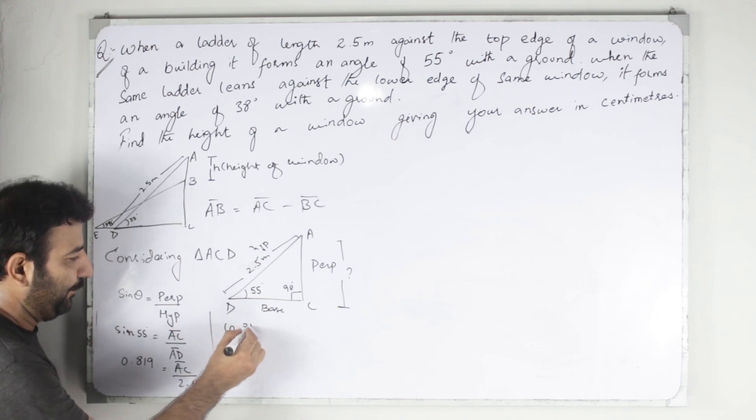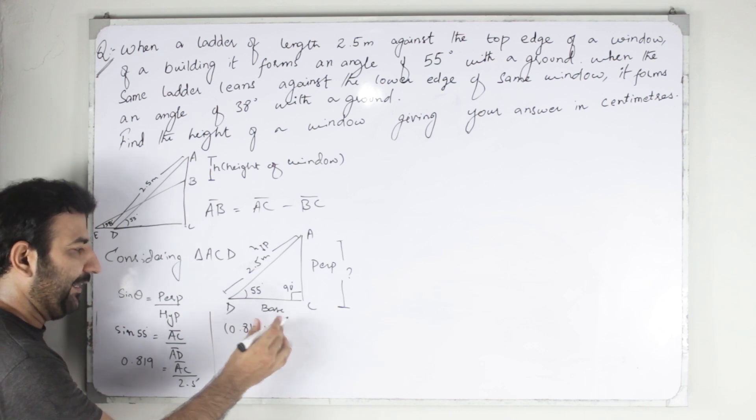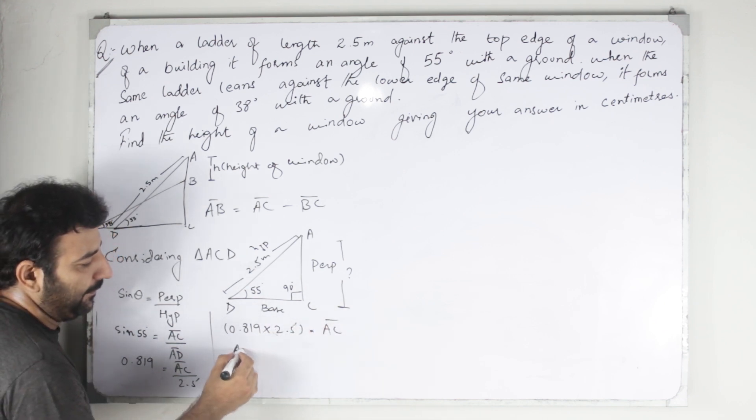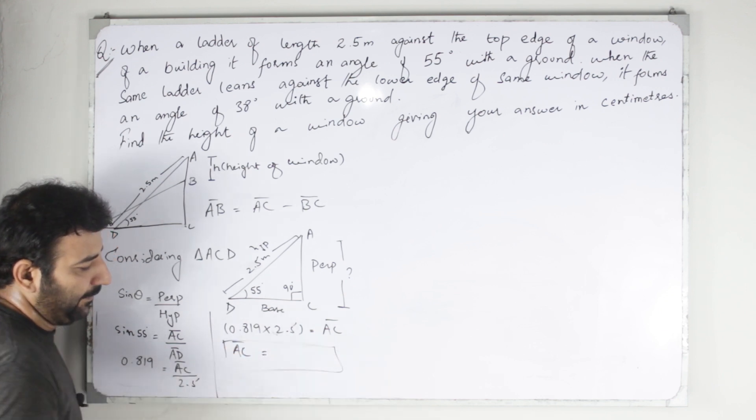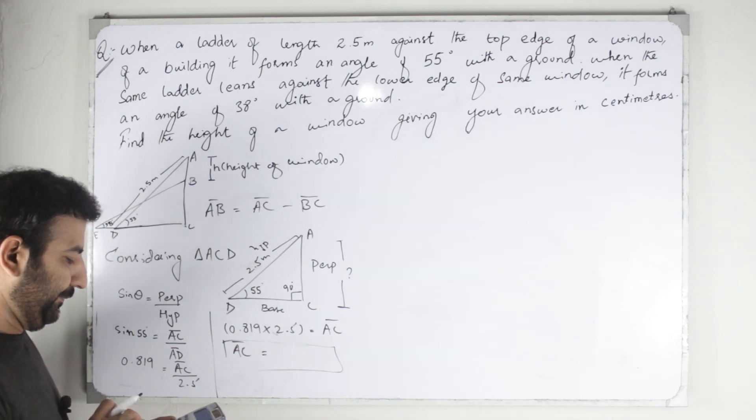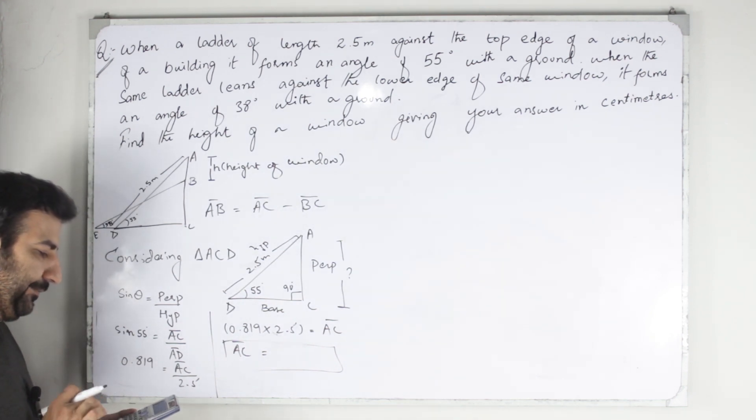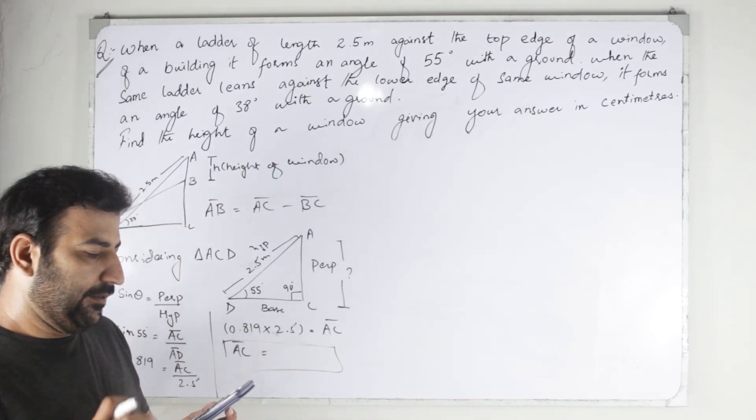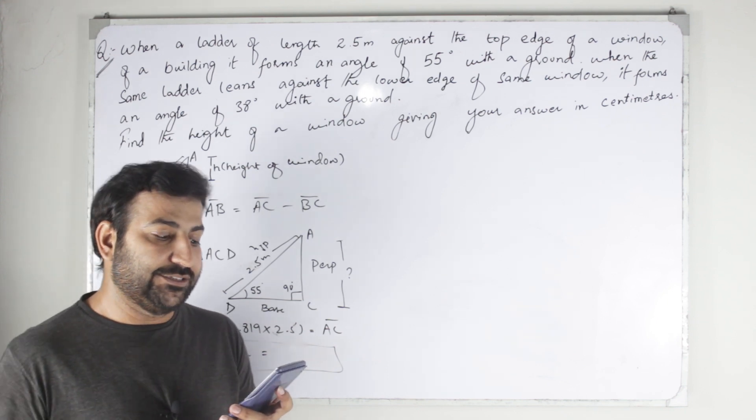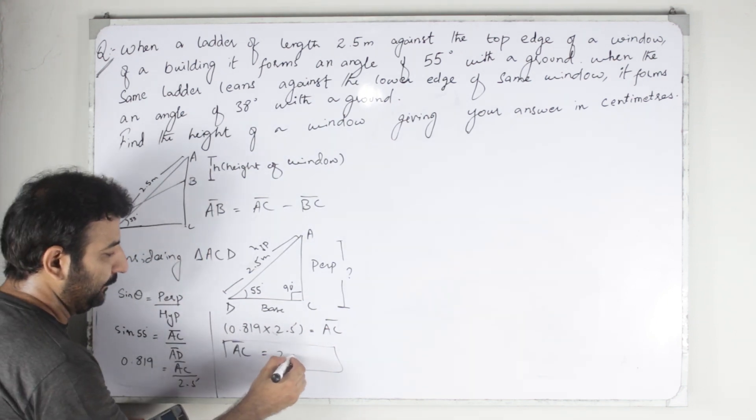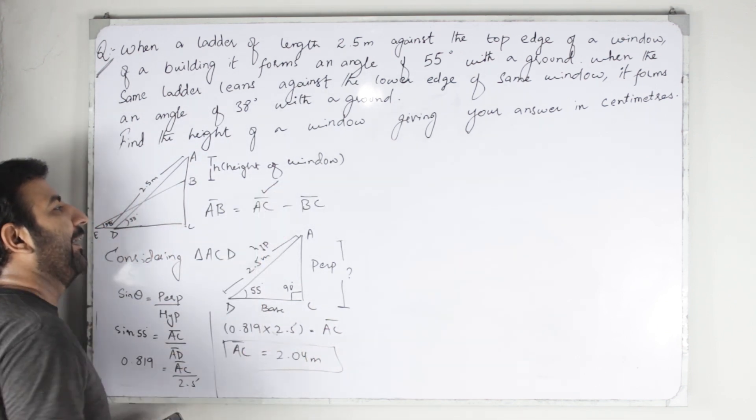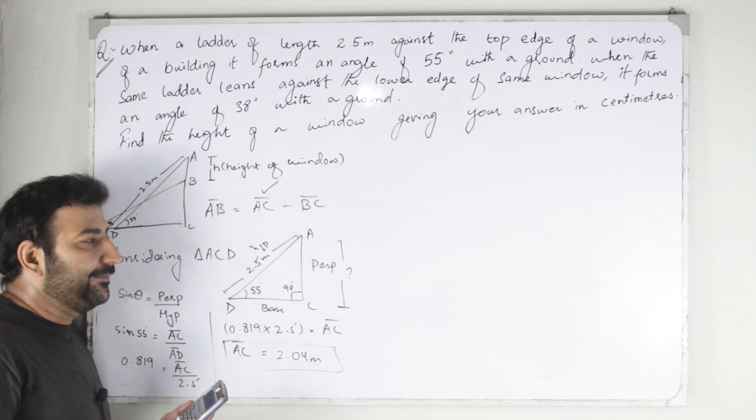0.819 multiplied by 2.5... the answer we get is 2.043 meters. So AC we find it.